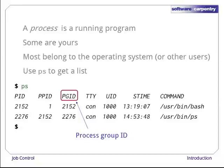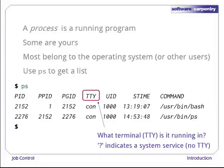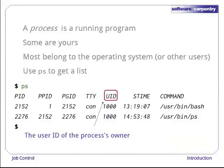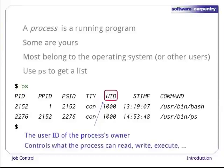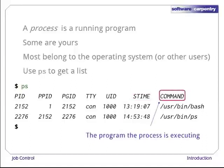Column 4 shows the ID of the terminal this process is running in. Once upon a time, this really would have been a terminal connected to a central timeshared computer. If a process is a system service such as a network monitor, ps will display a question mark for its terminal, since it doesn't actually have one. Column 5 shows the user ID of the user this process is being run by — this is the user ID the computer uses when checking permissions. The process is allowed to access exactly the same things as the user — no more, no less. Column 6 shows when the process started running, and column 7 shows what program the process is executing.